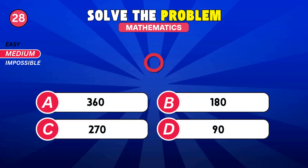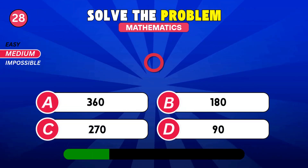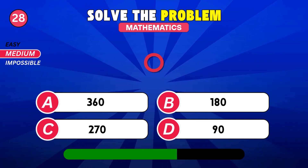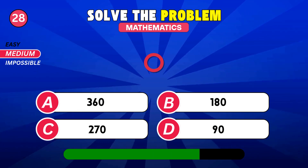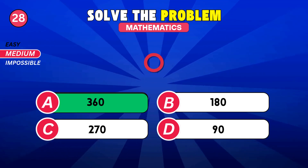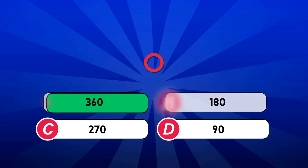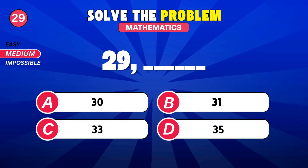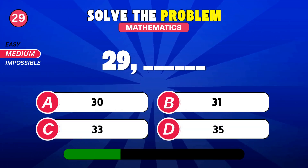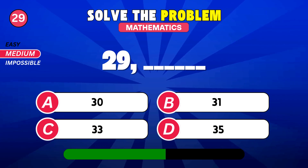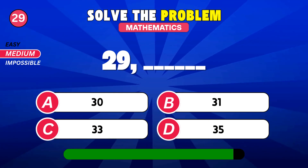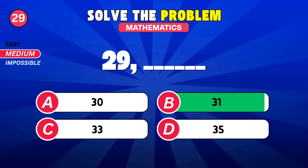Total degrees in a circle. 360. Next prime number after 29. 31.